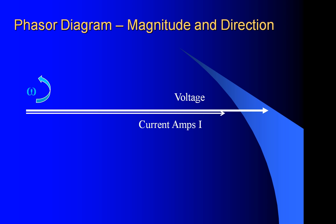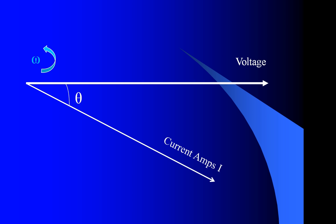When we examine the phasor diagram for resistive load, we find again that the current is in phase with the voltage, and there is no angle. Whereas when we look at the phasor diagram for an inductive load, we find that the current is lagging behind the voltage by the angle theta.